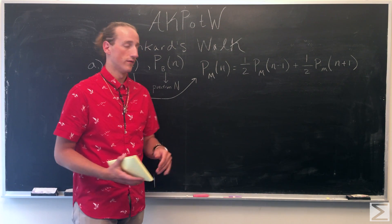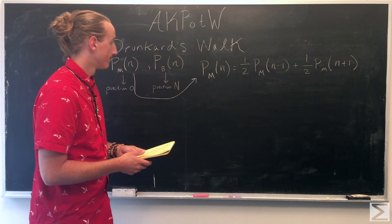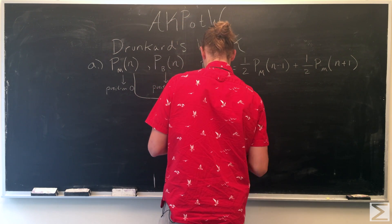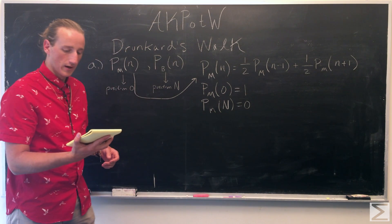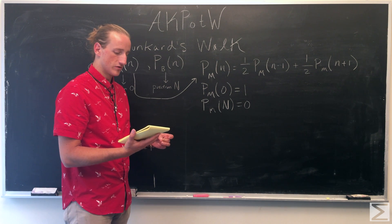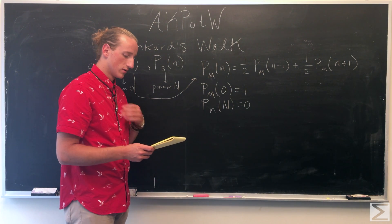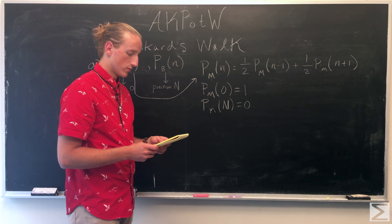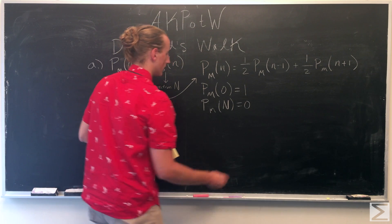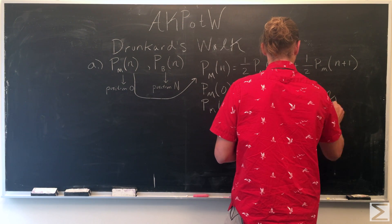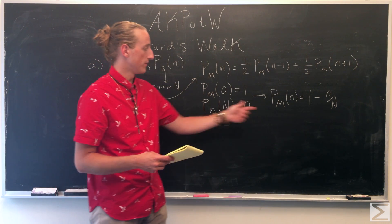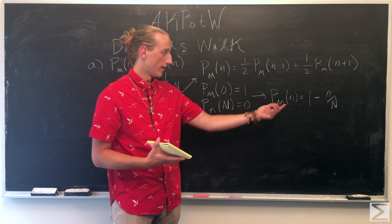For the boundary conditions, we know Pm of 0 is going to be 1 since McDonald's is at position 0, and Pm of big N is going to be 0. So we can write Pm of n, and the probability of ending at the bar is just going to be 1 minus the probability that he'll be at McDonald's, giving us Pb of n equals 1 minus Pm of n.